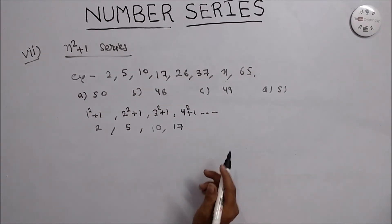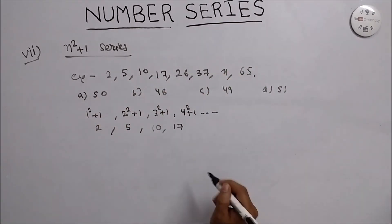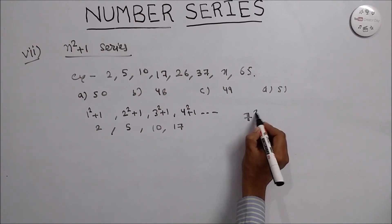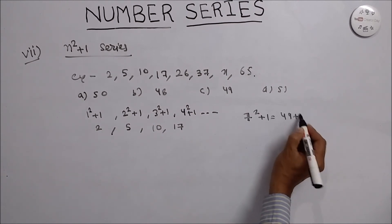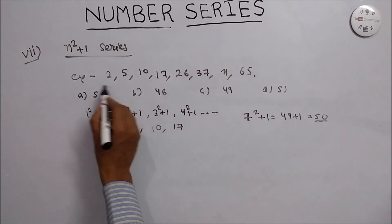Similarly, if we are talking about this, we calculate 1, 2, 3, 4, 5, 6, 7. So we can directly say that 7 square plus 1, that is 49 plus 1, is 50, is the answer of the series.